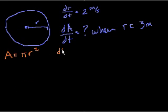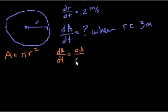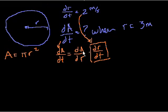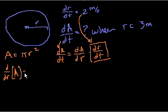The chain rule tells us that the rate at which A changes with respect to t is equal to the rate at which A changes with respect to r, times the rate at which r changes with respect to t. We already know the rate at which r is changing with respect to time — that's right here. So all we have to do to figure out the rate at which A is changing with respect to time is figure out the rate at which A changes with respect to r.